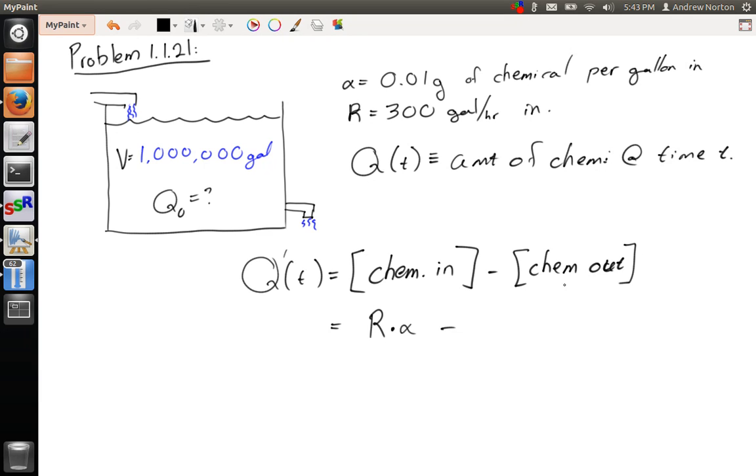The amount of chemical going out of the tank is q of t, the actual amount of chemical in the tank, divided by the volume, because it's a uniform distribution of chemical. So this is the amount of chemical per gallon going out. So then, we can say this is R times alpha minus q of t over V.